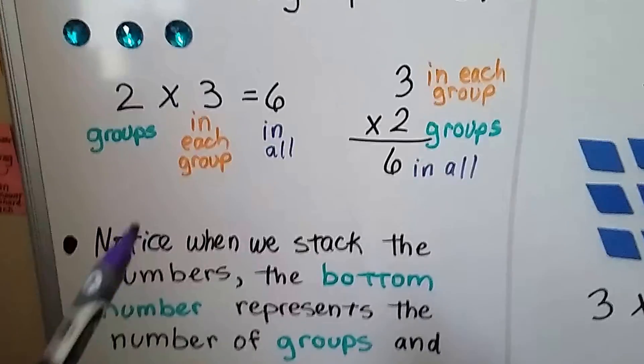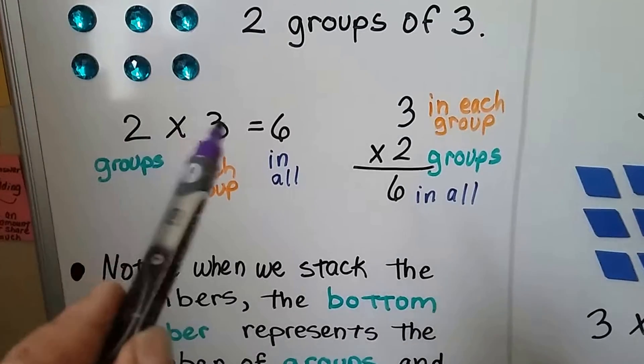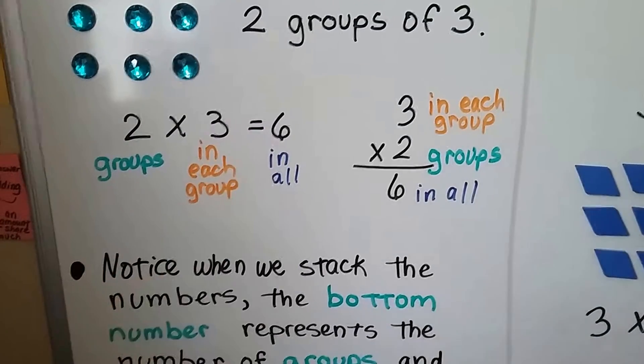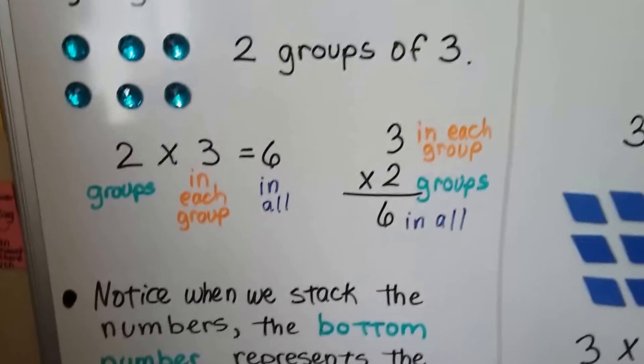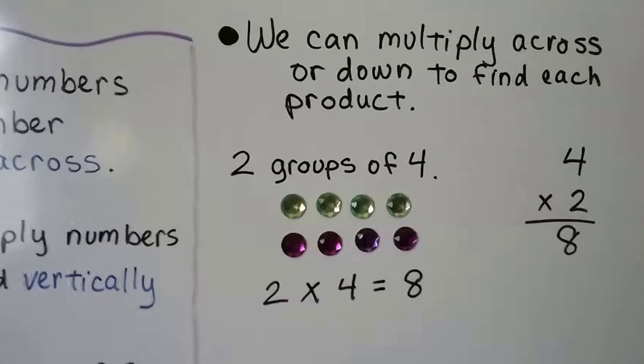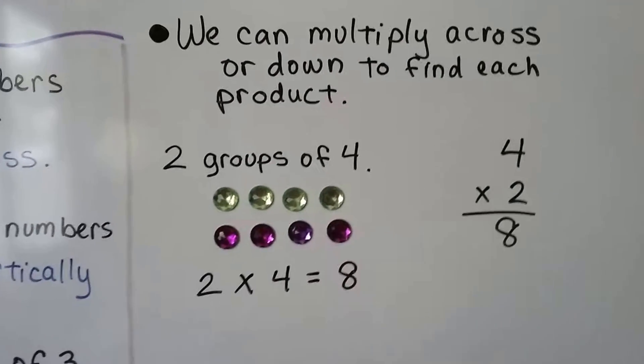So even if we switched this order to three times two, it's still going to equal six. We can multiply across or down to find each product.